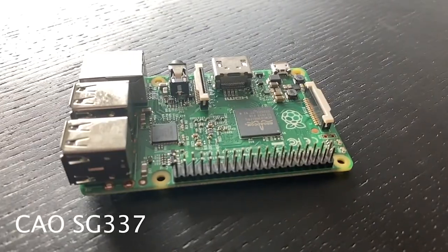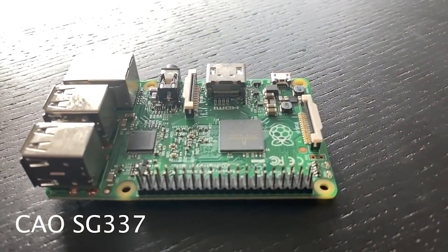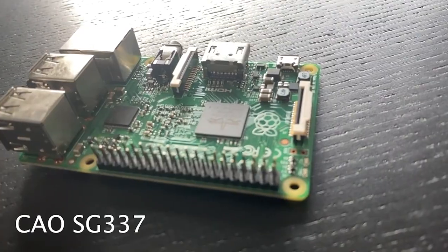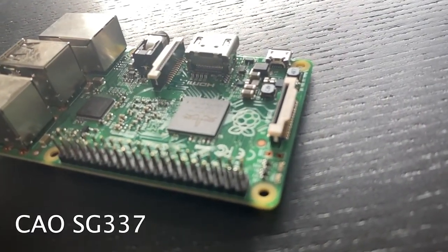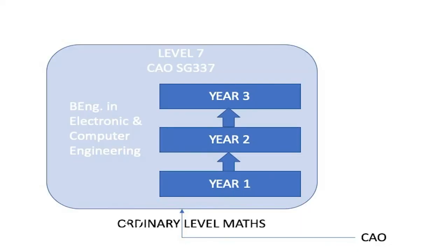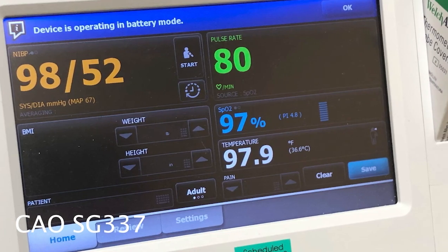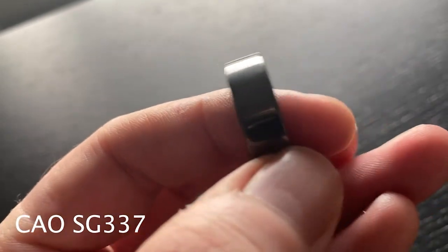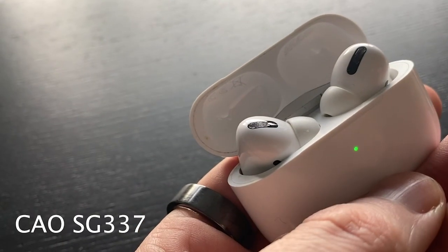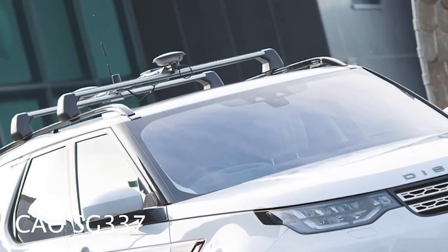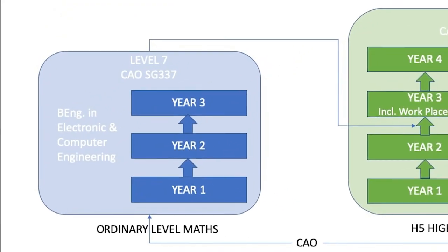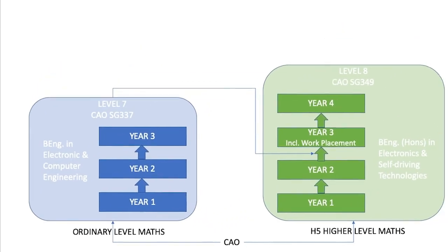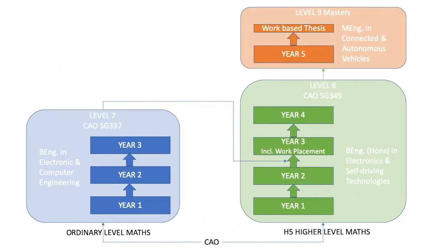If you are interested in technology or engineering but are not doing higher level maths, why not consider our Level 7 in Electronic and Computer Engineering? This is a three-year programme that looks at the design and development of embedded electronic systems — the medical devices that keep us healthy, the consumer devices that keep us entertained, or the controlled systems that keep us safe on the road. You can then progress onto the Level 8 in Electronics and Self-Driving Technologies and from there to the masters. Check out the link below for more information.